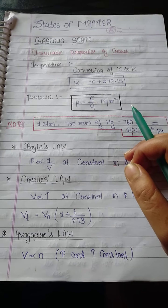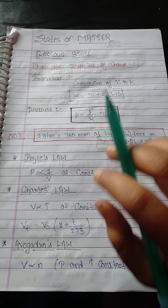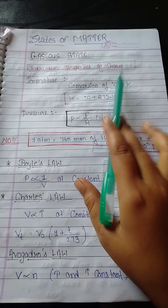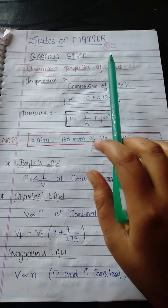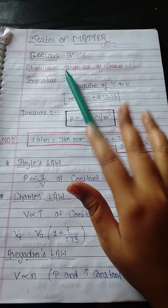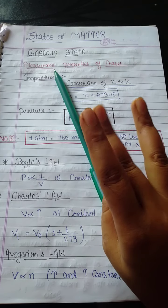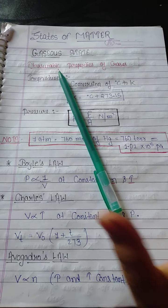Hello everyone, I am back to you. Today I have brought the States of Matter chapter. Matter is of three types: solid, liquid, and gas. My first topic is the gaseous state.